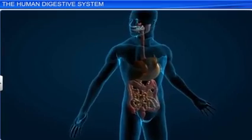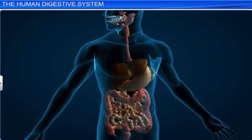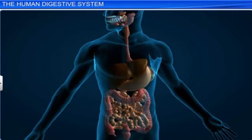Together, the organs of the alimentary canal and the associated glands digest the food we eat and expel the undigested food.